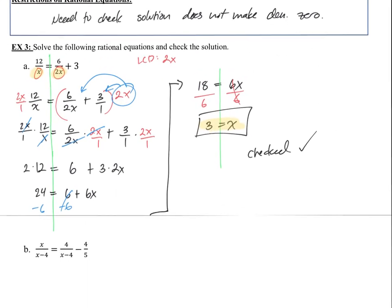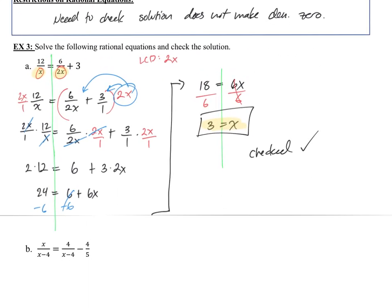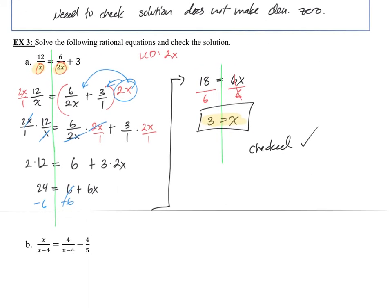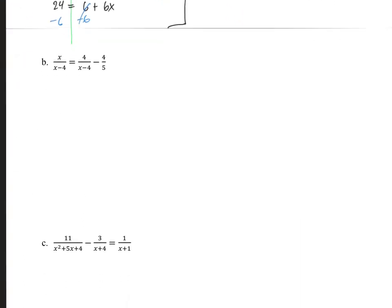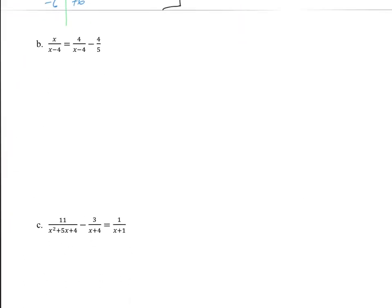When would it have been problematic? If x equals 0, then we would have had 0 in the denominator, and we would say no solution.